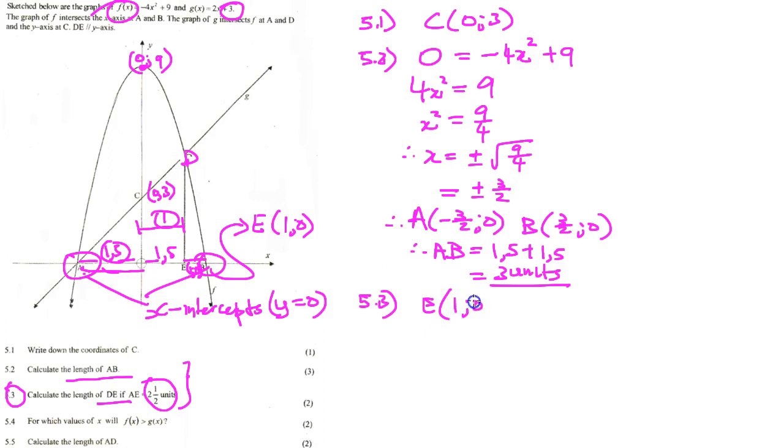Now this line is a vertical line, which means that the coordinates of C, or the x-coordinate I should say, is also going to be 1. So I just need to find the y-coordinate.